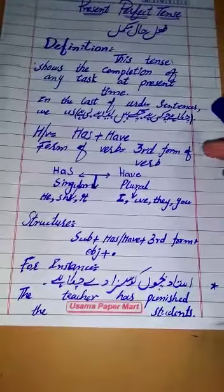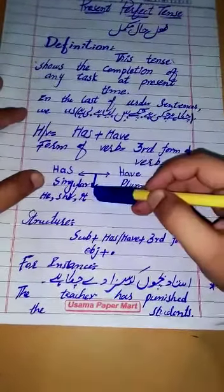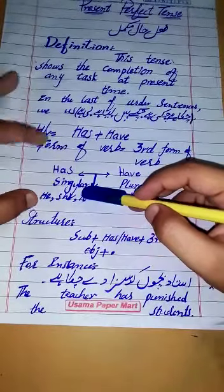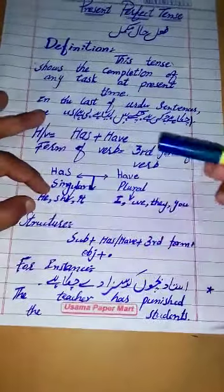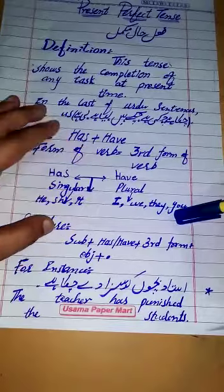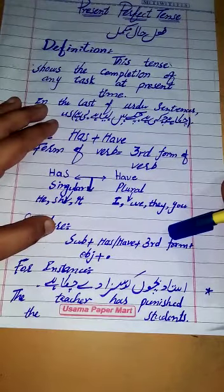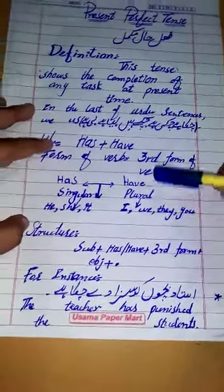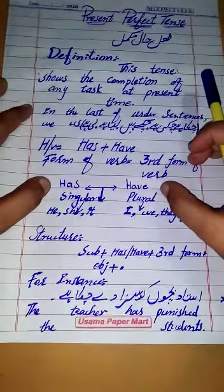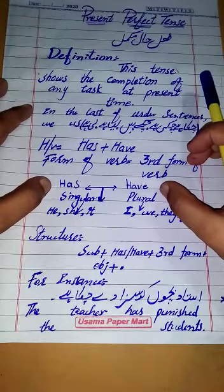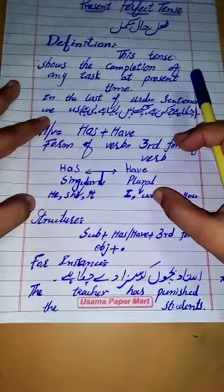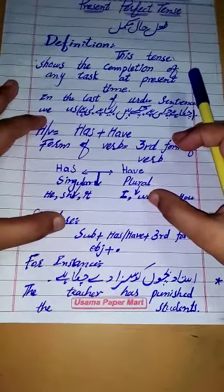We use 'has' with singular subjects — meaning he, she, and it. We use 'have' with plural subjects — meaning I, we, they, and you. Note that 'I' and 'you' are also considered plural here. So the definition, helping verbs, and verb form are now clear.